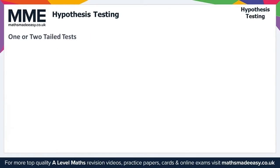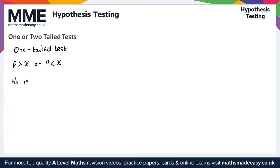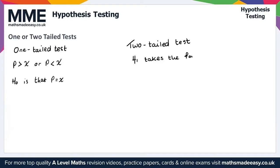Hypothesis tests can be one-tailed or two-tailed, and this depends on H1. In a one-tailed test, H1 takes the form P greater than X or P less than X, where H0 is that P is equal to X. In a two-tailed test, H1 takes the form P is not equal to X, where H0 is again that P is equal to X.